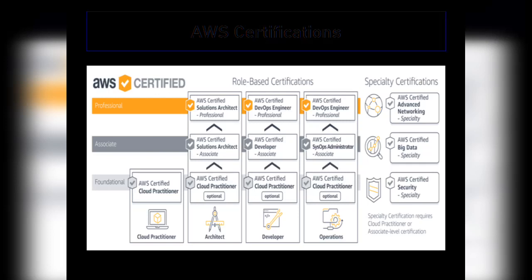Moving to the next one is the associate level certificate, which is divided into three parts. The first is AWS Certified Solutions Architect Associate level. This certificate is for individuals who have good knowledge on designing and planning applications in AWS. The next one is AWS Certified Developer Associate level, which is for people who love to develop and deploy solutions in AWS and are already in a development role.